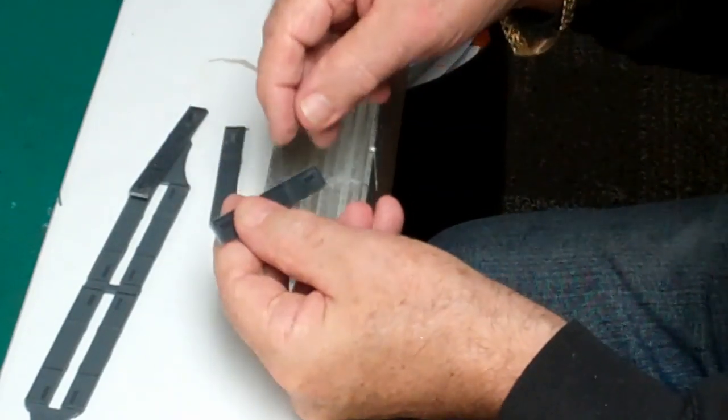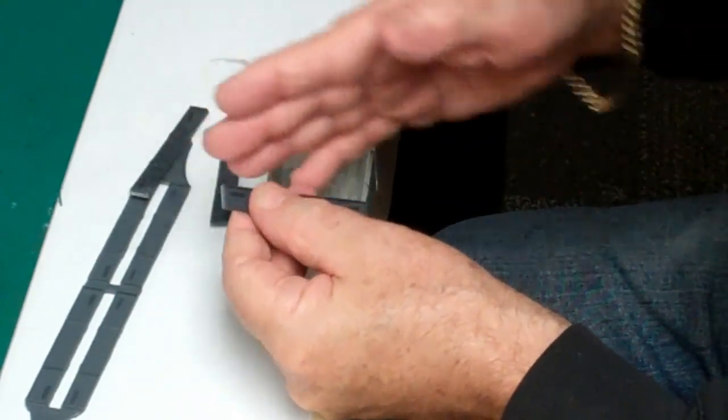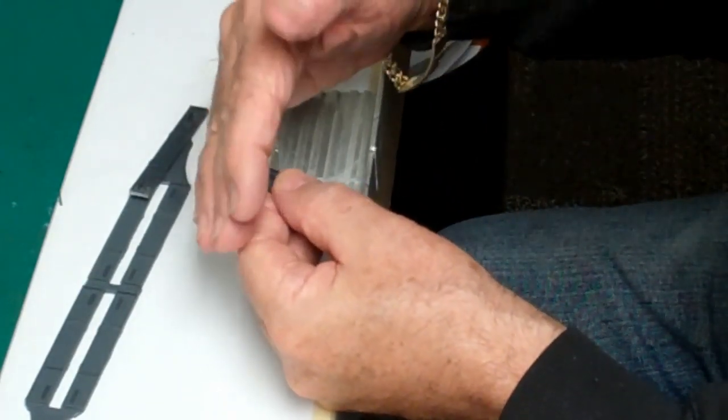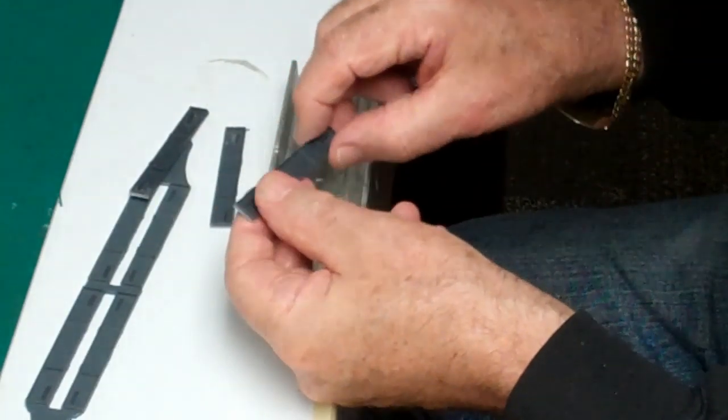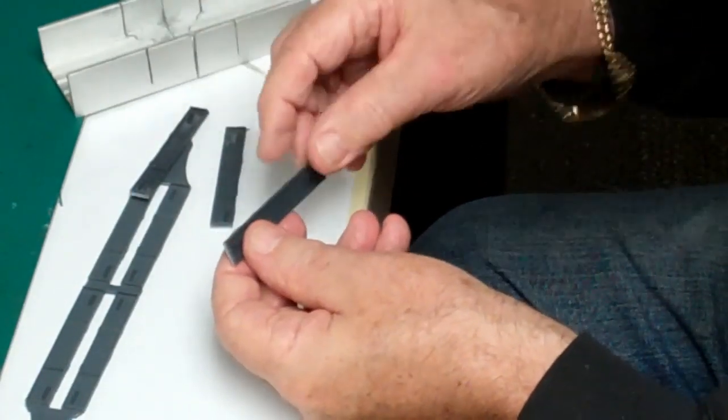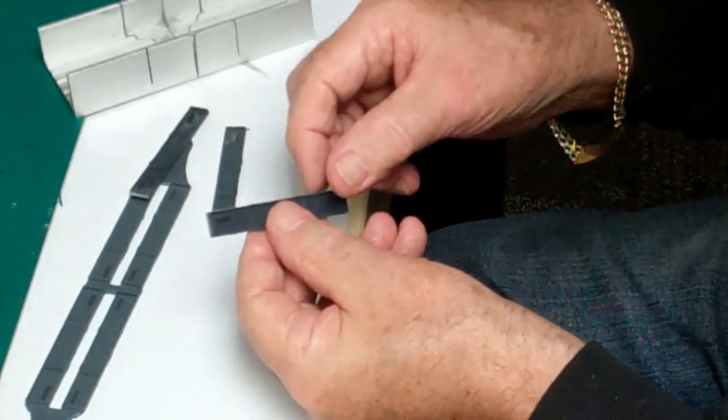Later what I'll then do is take a sanding block on a square and I'll sand that so that it is smooth and square to the top surface.